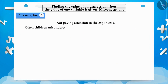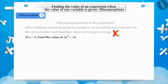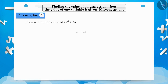Often, children misunderstand or assume x squared as x times 2 and solve the question accordingly, resulting in a wrong answer. If a equals 4, find the value of 2a squared plus 3a. Children often misunderstand a squared as a times 2 and solve it as: 2a times 2 plus 3a equals 4a plus 3a equals 7a equals 7 multiplied by 4 equals 28. The obtained answer of 28 is wrong.